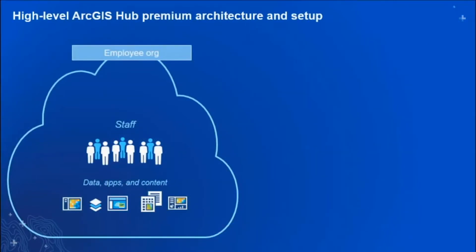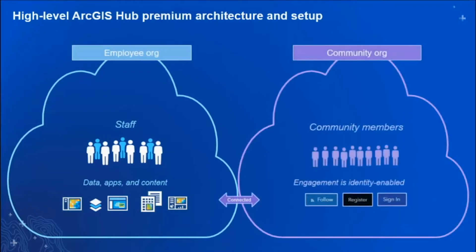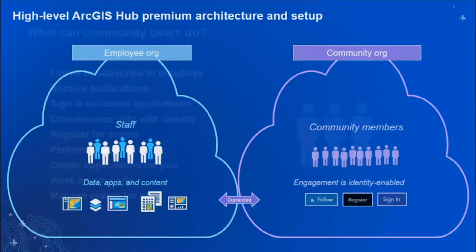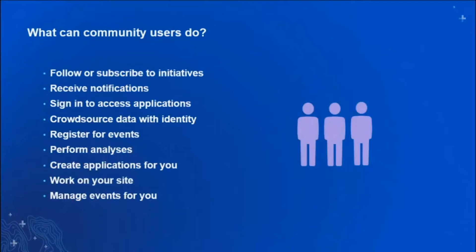When you license and activate ArcGIS Hub Premium, a second online organization — a community organization — gets connected to your primary employee organization. That community organization houses the identities for community members as well as any credits they need to do their work. It's kept separate from your staff and the content you create. However, a special awareness is created — your employee organization knows about the community organization and knows how to work with it.